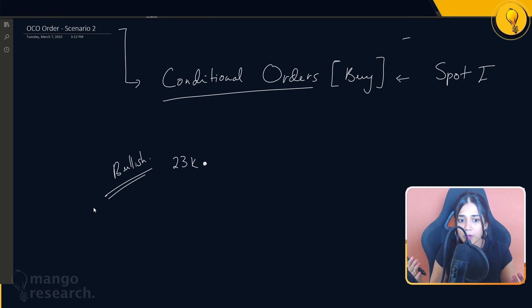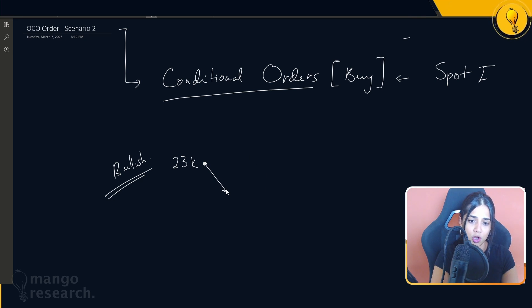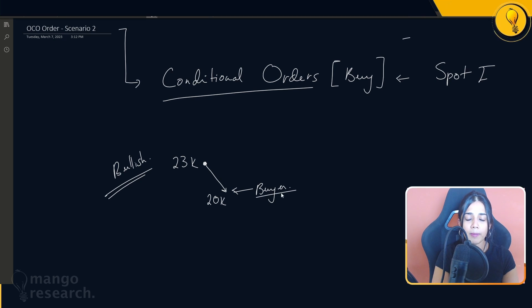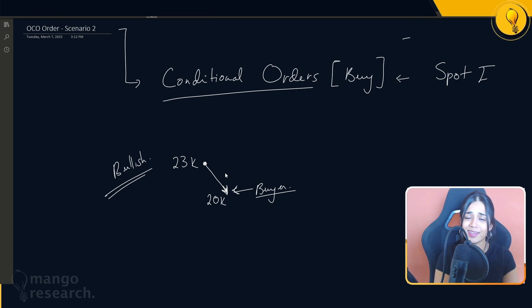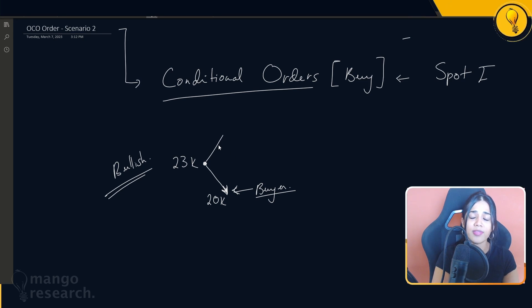I've got a nine-to-five job, so I might not even be on the computer to execute a bid if I do get a pullback. Let's say if Bitcoin pulls back to $20,000, I want to be a buyer there. However, Bitcoin has been resilient around 22–23k, so it might not even get down to twenty thousand dollars.